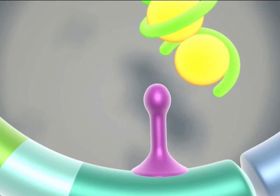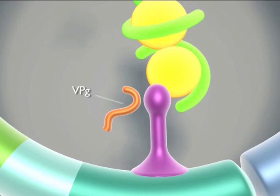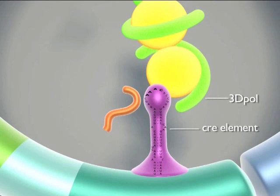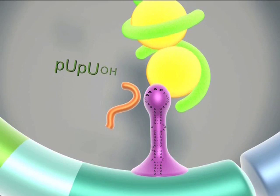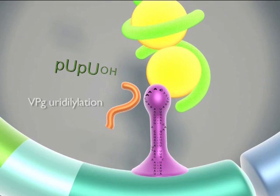With further protein cleavages, more VPGs have become available. A conserved structure on the CRE element will serve as a template for the polymerase 3D pole to add U's on the VPG. This is called uridylylation of VPG and it may happen recurrently to produce a reservoir of uridylylated VPGs.